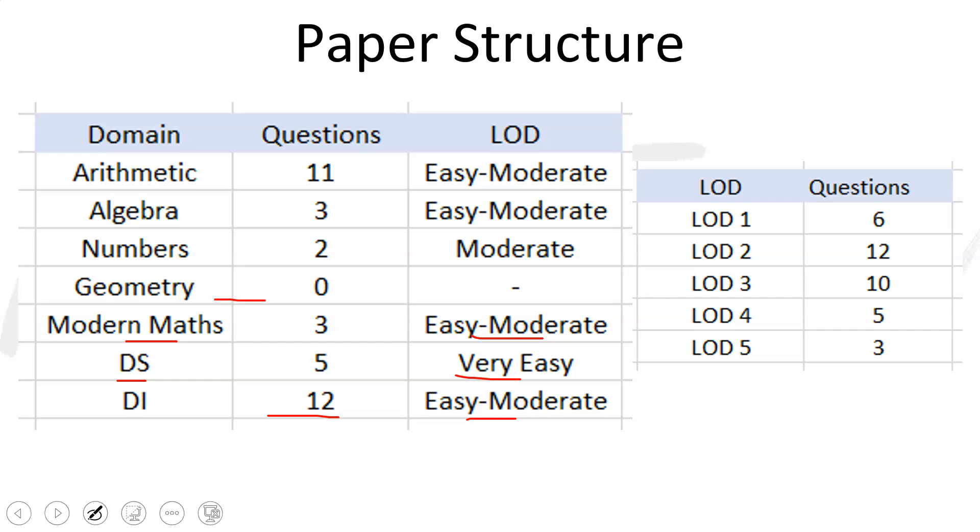Number system, definitely number system, two questions. I've kept general counting under arithmetic. The number system questions were moderate. One was very easy, one was moderate, so I've kept it at moderate. Algebra, you can see, three questions only, easy to moderate.